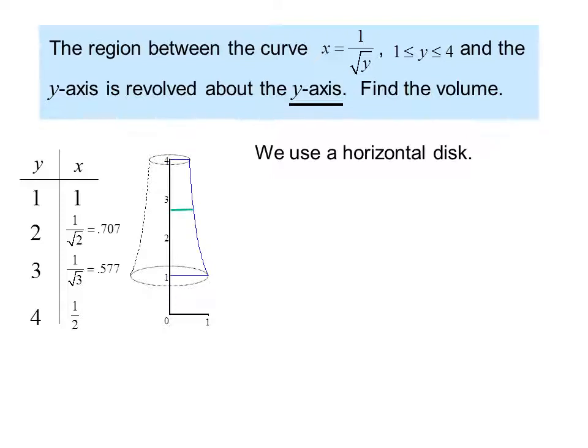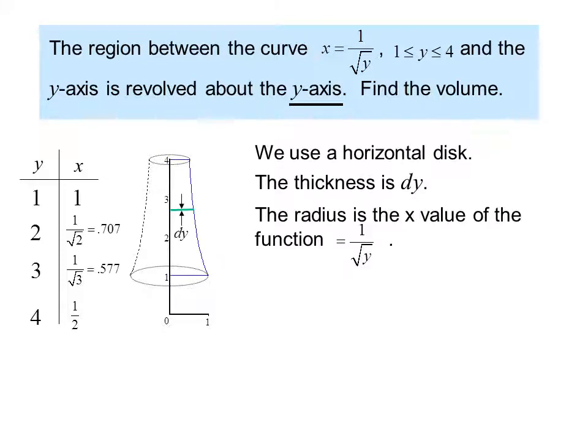We use a horizontal disk. The thickness is dy. The radius is the x value of the function, or 1 over radical y. The volume then, if we add up all the disks, is the integral from 1 to 4 of pi times 1 over radical y, squared, dy.